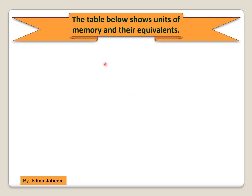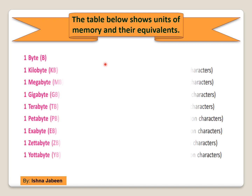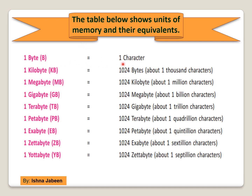The table below shows units of memory and their equivalence. 1 byte is equal to 1 character. 1 kilobyte (KB) is equal to 1024 bytes, which is about 1000 characters. 1 megabyte (MB) is equal to 1024 KB, which is about 1 million characters. 1 gigabyte (GB) is equal to 1024 megabytes, about 1 billion characters. 1 terabyte (TB) is equal to 1024 gigabytes, about 1 trillion characters. 1 petabyte (PB) is equal to 1024 terabytes, which is about 1 quadrillion characters.